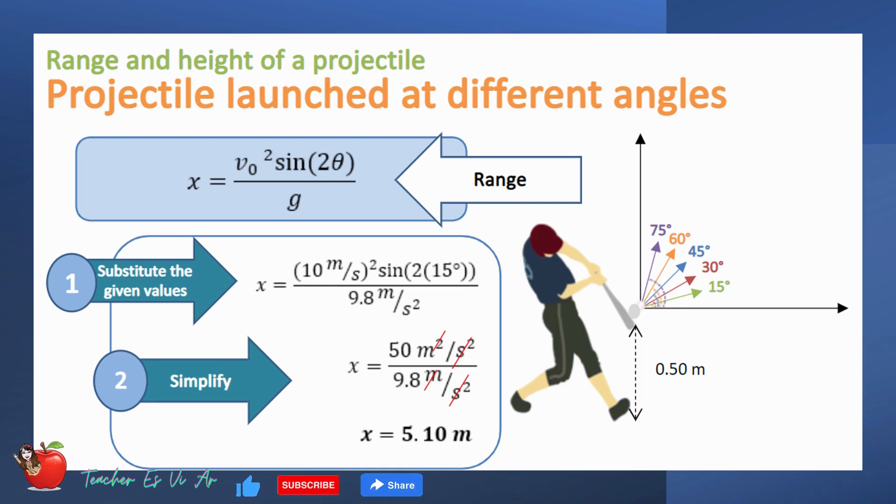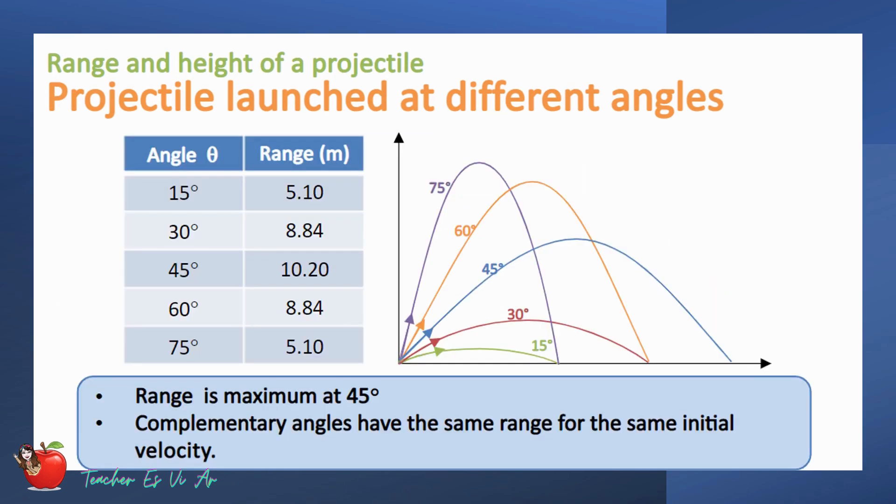Try solving each range for each given angle. These are the range of the projectile at different angles. Did you get the same answer? What can you notice about the range? We can see that the range is maximum at 45. Moreover, the results showed that complementary angles have the same range for the same initial velocity.